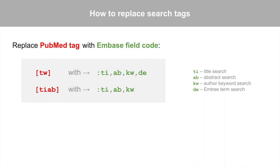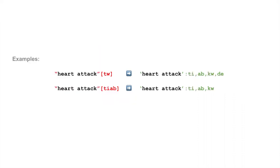Here's how to replace a PubMed search tag with an Embase field code for common types of text word searches. First, for the PubMed text word search, replace the square-bracketed TW with colon TI,AB,KW,DE. Notice that field searches are separate for the title, abstract, keyword, and EmTree searches; to search multiple fields at once, add the field codes separated by commas. For the PubMed title-abstract search, replace the square-bracketed TIAB with colon TI,AB,KW. Here are examples of these translations, and remember to replace any double quotes with single quotes.